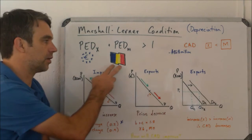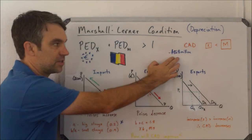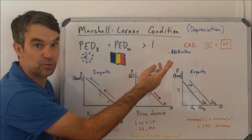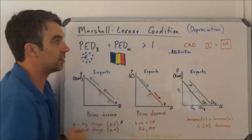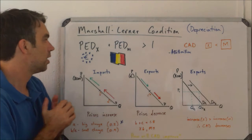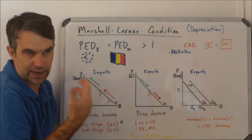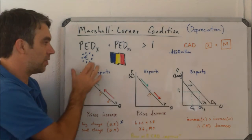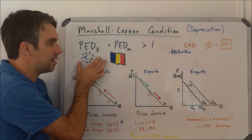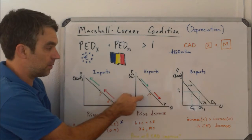For our example today, we're going to look at Romania. Romania has a current account deficit — according to the CIA World Factbook in 2014 — of $868 million. We're going to assume they do most of their trade with the Eurozone. That's not necessarily true, but we do need a specific trading partner for one of the examples.